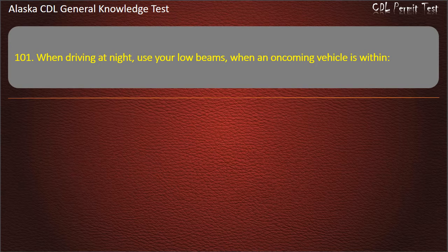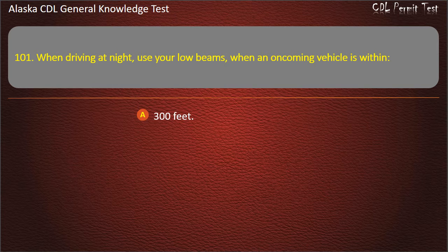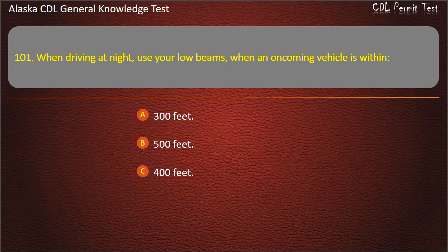Question 101. When driving at night, use your low beams when an oncoming vehicle is within 300 feet, 500 feet, or 400 feet. Answer: 500 feet.